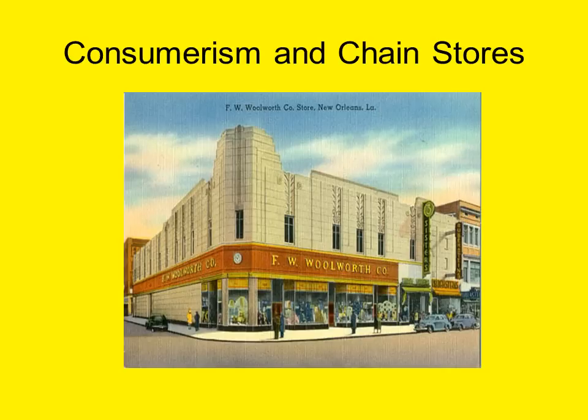Consumerism is linked very closely with the rise of chain stores in the United States. In 1879, F.W. Woolworth opened the first of his five- and ten-cent stores in Utica, New York. He sold items like crochet needles, soap, thimbles, and harmonicas. Woolworth found that if he offered an item at a low price, the consumer would purchase it on the spur of the moment — hence the name Five and Dime, or five-and-ten-cent store. By 1911, the Woolworth chain had 596 stores and sold a million dollars of merchandise per week.